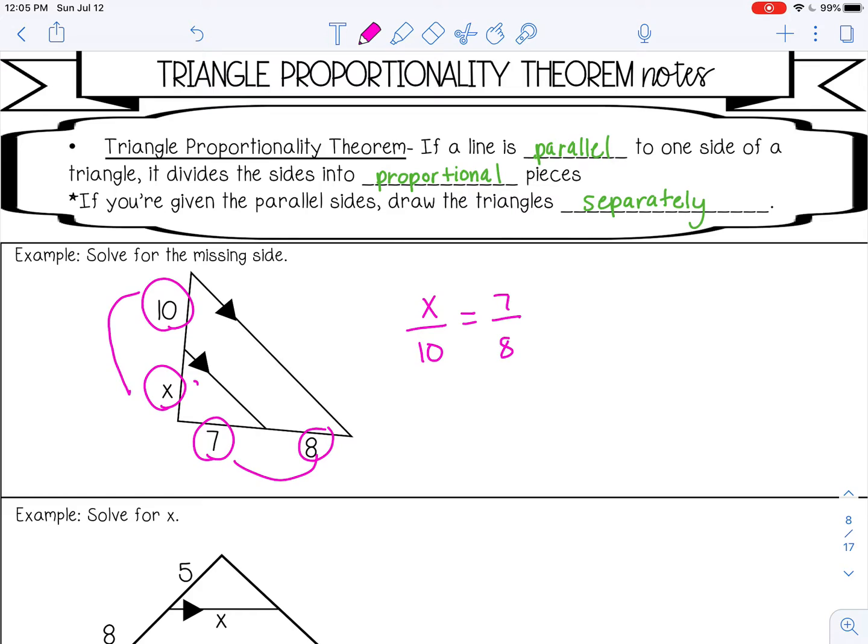Because I went from the bottom to the top here, I want to go from this to this, 7 over 8. I wouldn't want to go X, 10, 8, 7. I want to match it. So we can cross multiply here. So 8X equals 70, divide by 8. So X equals 8.75.